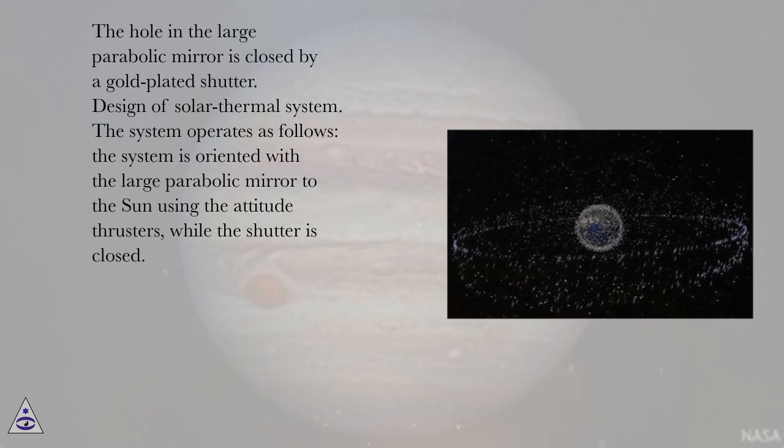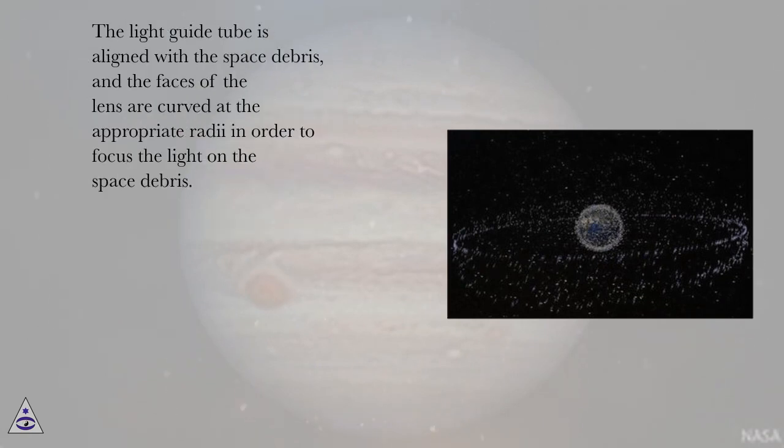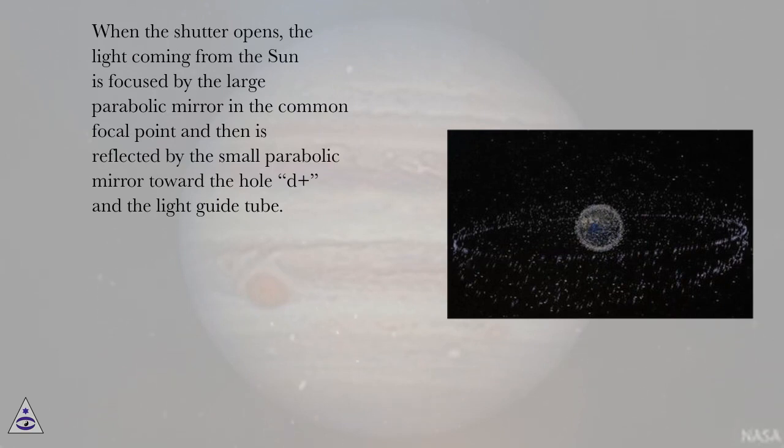Design of Solar Thermal System. The system operates as follows: the system is oriented with a large parabolic mirror to the sun using the attitude thrusters, while the shutter is closed. The light guide tube is aligned with the space debris, and the faces of the lens are curved at the appropriate radii in order to focus the light on the space debris. When the shutter opens, the light coming from the sun is focused by the large parabolic mirror in the common focal point and then is reflected by the small parabolic mirror toward the hole D+, and the light guide tube.